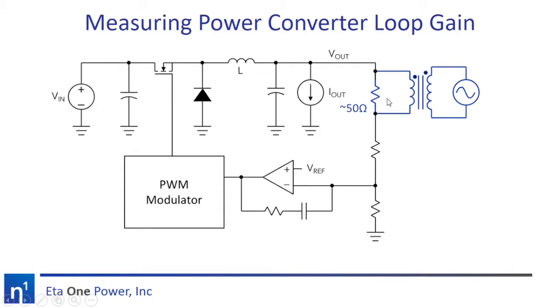To measure the loop gain, we need to inject a test signal into our power converter. We first insert a small resistor in series with the feedback network. Since this resistor is much smaller than those in the feedback network, it will not significantly change the operation of the circuit.